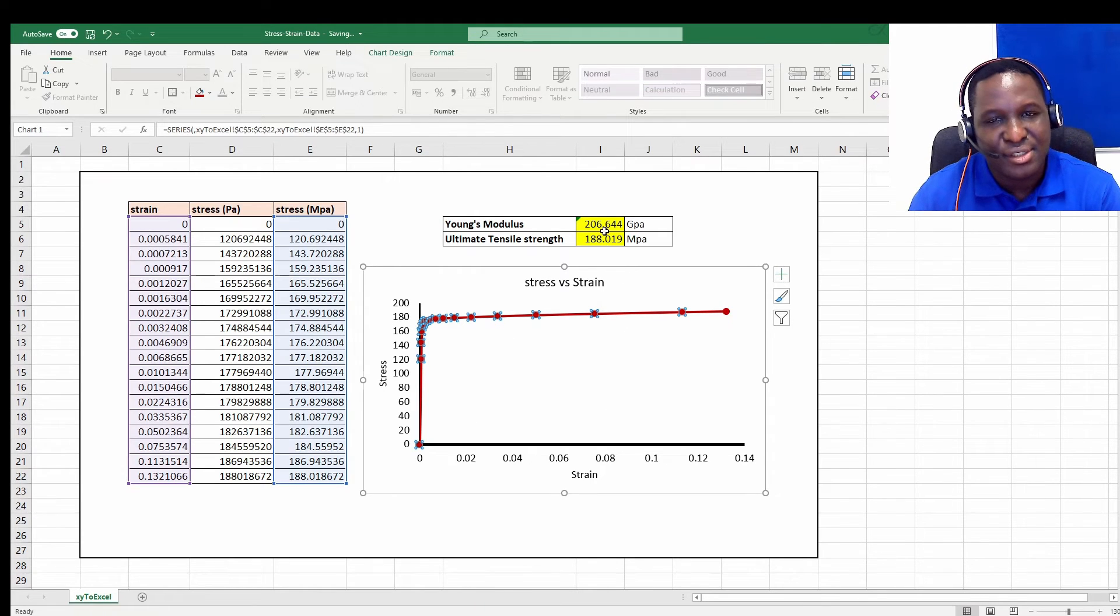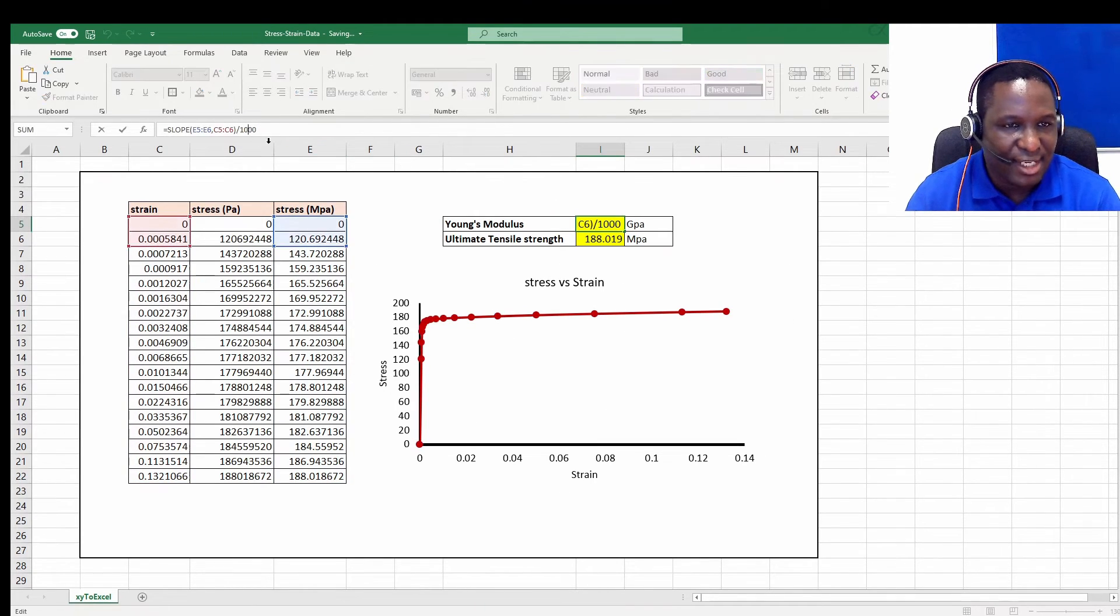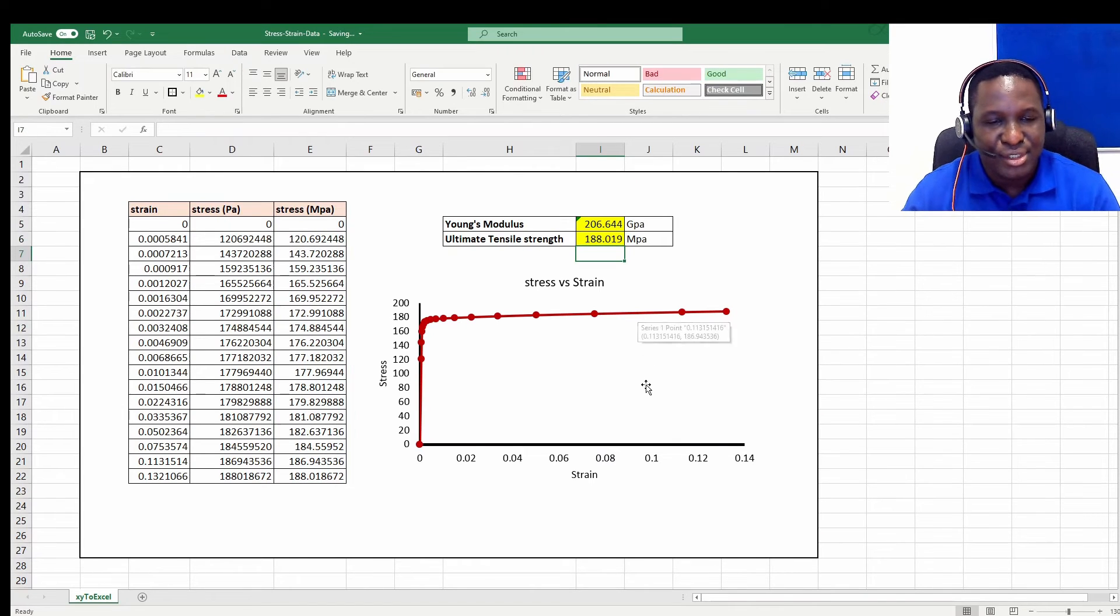So you get your data here. So I've also generated for this kind of material what the Young's modulus would be, which is the slope, you know, the linear elastic region, and then as well as the strength, which is basically the ultimate tensile strength, which is the maximum stress in that region. So that's what we need to do, and this is how we can actually get our work done.